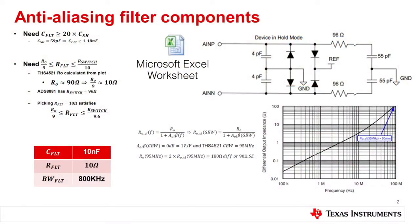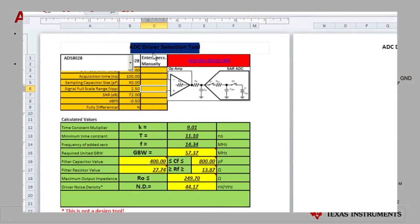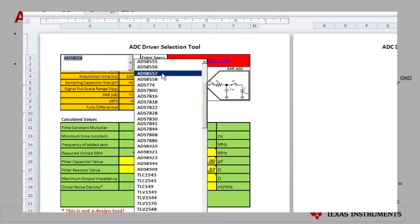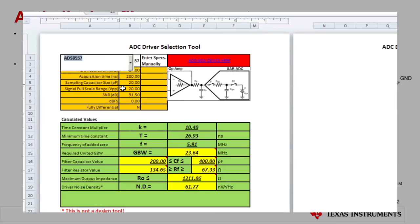How can you calculate these RC values in a very efficient way? Easy — you go to this Excel sheet I've provided. It has a pull-down menu from which you can select your part. These are all SAR ADCs. You pick any one you like, and the tool actually fetches the data for you — the RC values based on the full-scale voltage range, the acquisition time of the ADC, and other parameters such as bandwidth and input noise density.